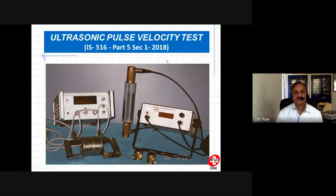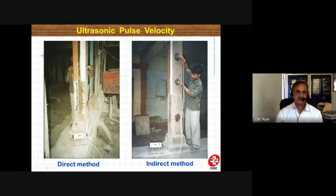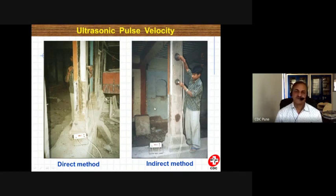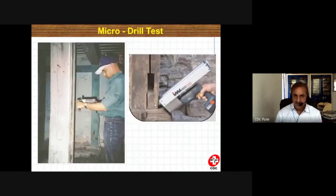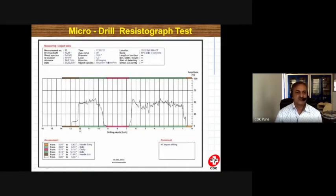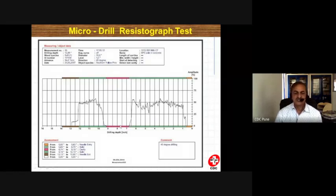A very powerful instrument is the ultrasonic pulse velocity instrument, which can be used extensively on timber structures. In direct measurement, the ultrasonic velocity is measured across the member. If the opposite face is not accessible, indirect measurement on one side is used. With ultrasonic testing we can identify the quality of timber. Similarly, a micro-drill test measures resistance of timber to drilling, plotting graphs to identify timber quality — a soft timber shows lower resistance while a good quality timber shows high resistance, and a cavity shows near-zero resistance. This allows us to identify voids at exact locations.